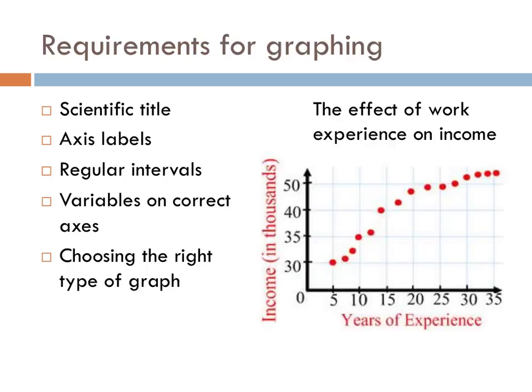There are a host of requirements to properly graph a set of data. First, every graph should have a scientific title. The scientific title should include the independent and dependent variable for the experiment and should thoroughly describe what occurred in an experiment. The format — the effect of the independent variable (IV) on the dependent variable (DV) — usually works quite well. In the graph to the right, work experience would be the manipulated or independent variable, while the measured value or dependent variable would be income.